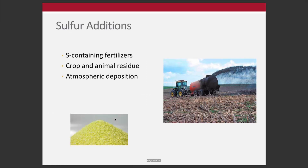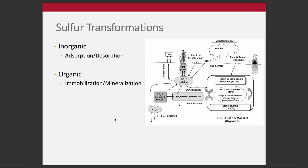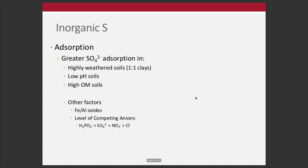Additions include fertilizers, crop and animal residue, and atmospheric deposition. Transformations can occur on the inorganic fraction — adsorption and desorption to the anion exchange capacity — and on the organic fraction through mineralization and immobilization. This inorganic cycling is not so much important for soils in Ohio, but on more highly weathered soils with one-to-one clays — Ultisols and Oxisols — this can be an important source of sulfur nutrition and acquisition by plants.